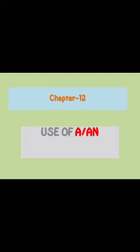In this chapter, we will learn where we should use A or AN, and what is the meaning of A or AN. A is used before a singular word which begins with a consonant. So if the beginning letter of a word is a consonant, we use A.